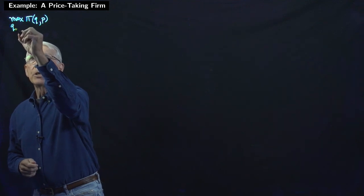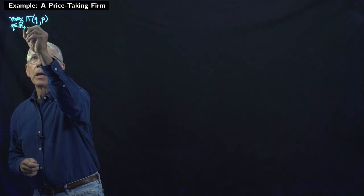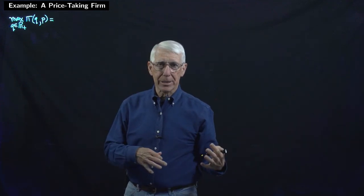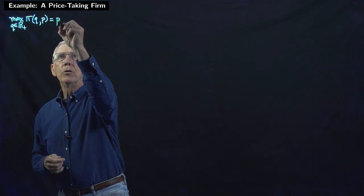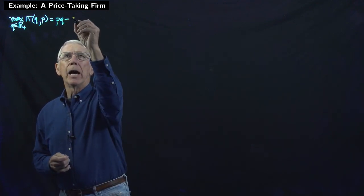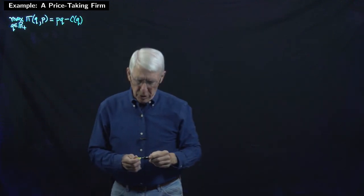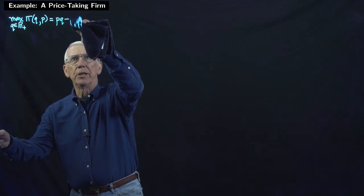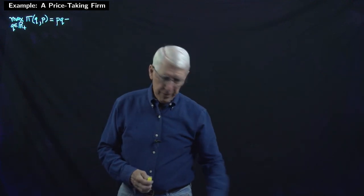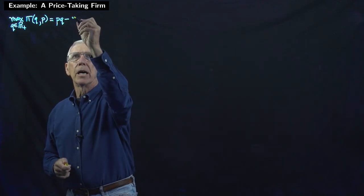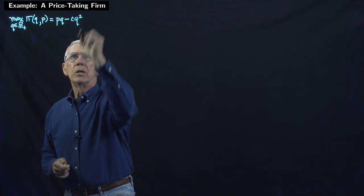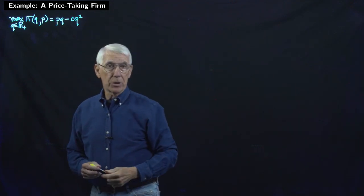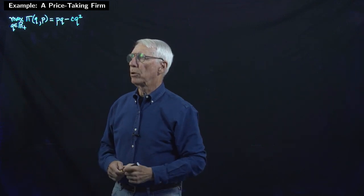The firm then chooses the quantity that will maximize profit given that price, maximizing over all Q in R+. Profit is just revenue minus cost by definition. Revenue is price times quantity, minus the cost associated with producing a given level of output. I'm going to put in a specific cost function here — let's say the cost function is C times Q squared. The fact that the cost function is strictly convex with Q squared makes the example go through nicely.